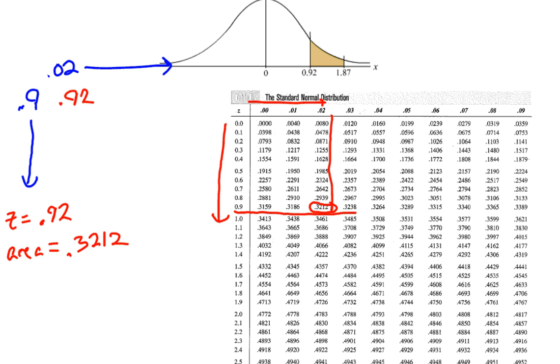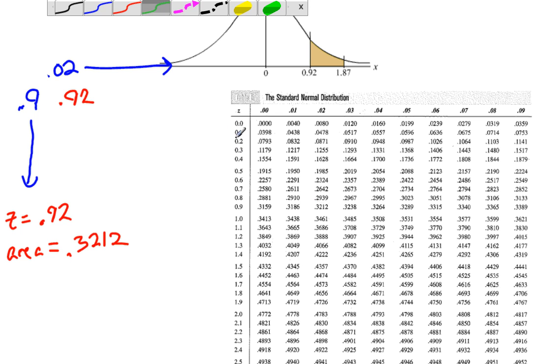Okay, so let's do that again. Let me change colors. Let's do it this time for the 1.87. So 1.8, so I come down here to get my 1.8. I come down, I go down to get the 1.8. So there it is.